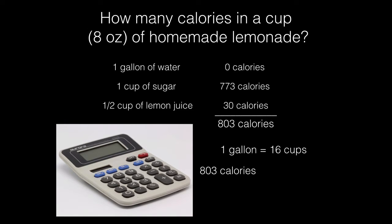So to get one cup, we have to divide one gallon by 16. We already know that we have 803 calories per gallon of lemonade and we have 16 cups in there, so if we only took one cup, we have to divide 803 by 16 and we get 50 calories.